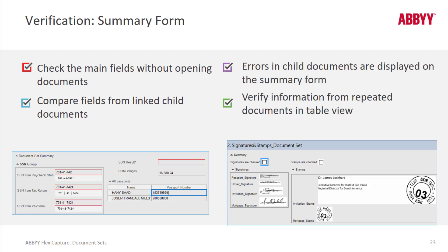In the summary form, there are important features that allow us to compare fields from linked child documents. Here we've got a comparison of social security numbers from three different documents: a paycheck stub, a tax return, and a W-2 form. We've got a rule violation because these numbers don't match — there's a little bit of image degradation right here, so that's critical.